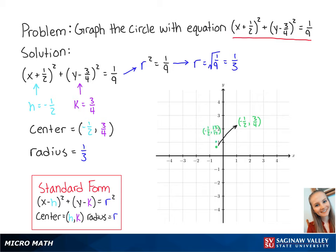our outside points are at negative one-half, thirteen-twelfths; negative one-sixth, three-fourths; negative one-half, five-twelfths; and negative five-sixths, three-fourths.